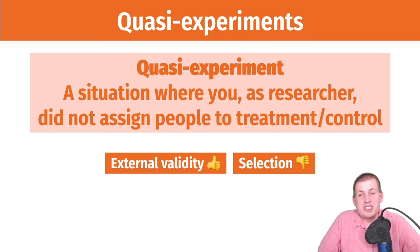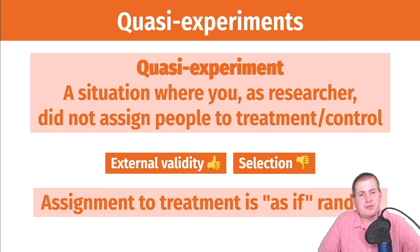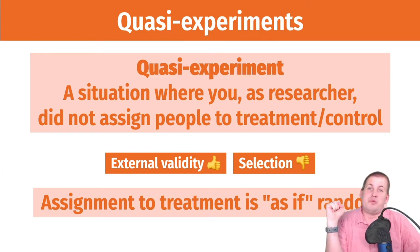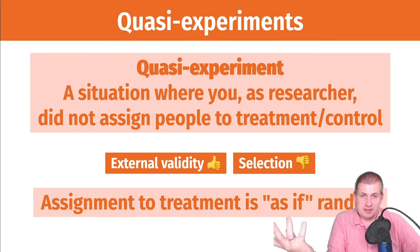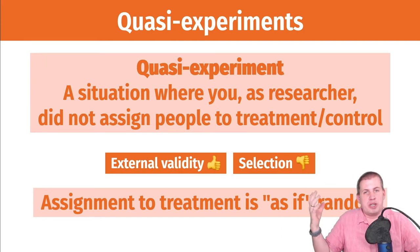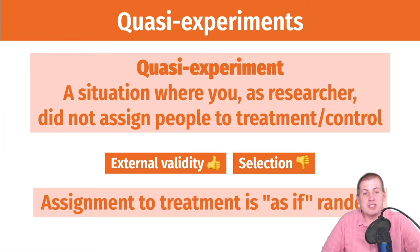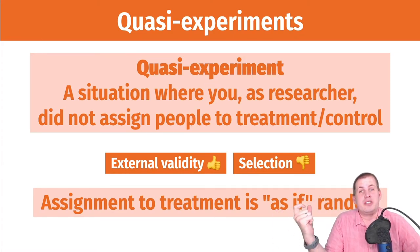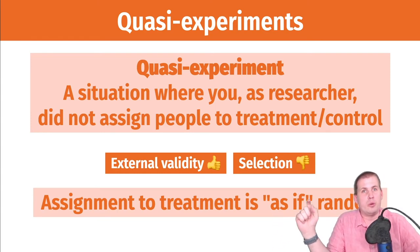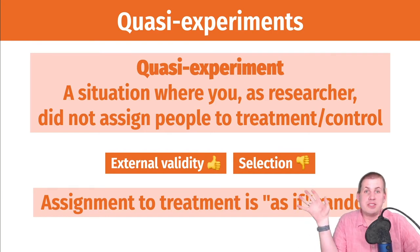The assumption underneath all quasi-experiments is that you have to treat assignment to treatment as if it were random — basically saying people chose their different outcomes as if randomly assigned, with no selection bias. It's just that some other researcher, nature, or somebody else assigned people to treatment and control. That's a big assumption to make, and in quasi-experimental research reports, significant portions of the paper are dedicated to explaining whether that assumption holds.